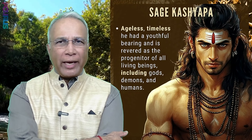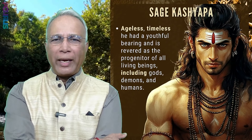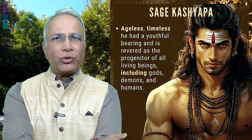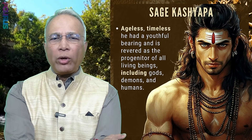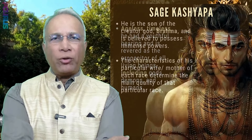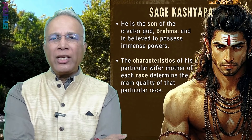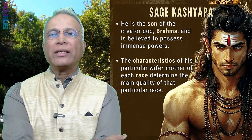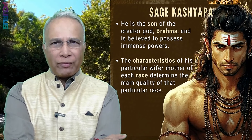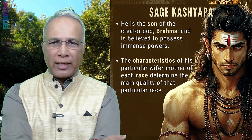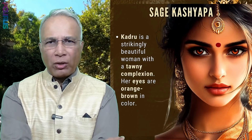Sage Kashyapa was ageless, timeless, and had a youthful bearing. He is revered as the pro-generator of all living beings, including gods, demons, and humans. He is the son of creator god Brahma and is believed to possess immense powers. The characteristics of his particular wife — the mother of each race — determine the main quality of that particular race.